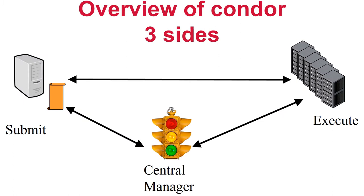Let's start by reviewing the three main components of an HTCondor system: the submit side, the central manager, and the execute or worker node side. Remember that these are functional breakdowns, not physical, and any one machine may perform more than one of these roles in a small pool.